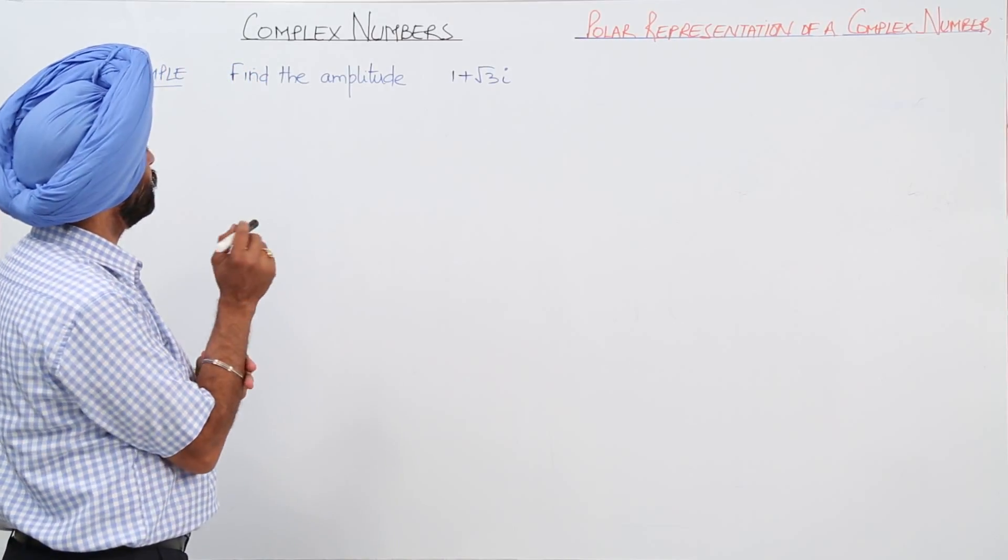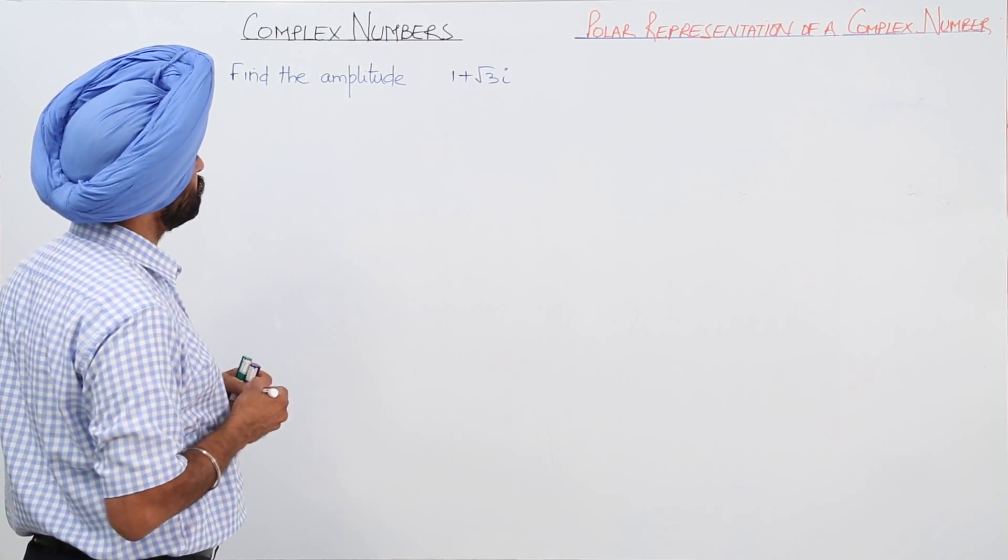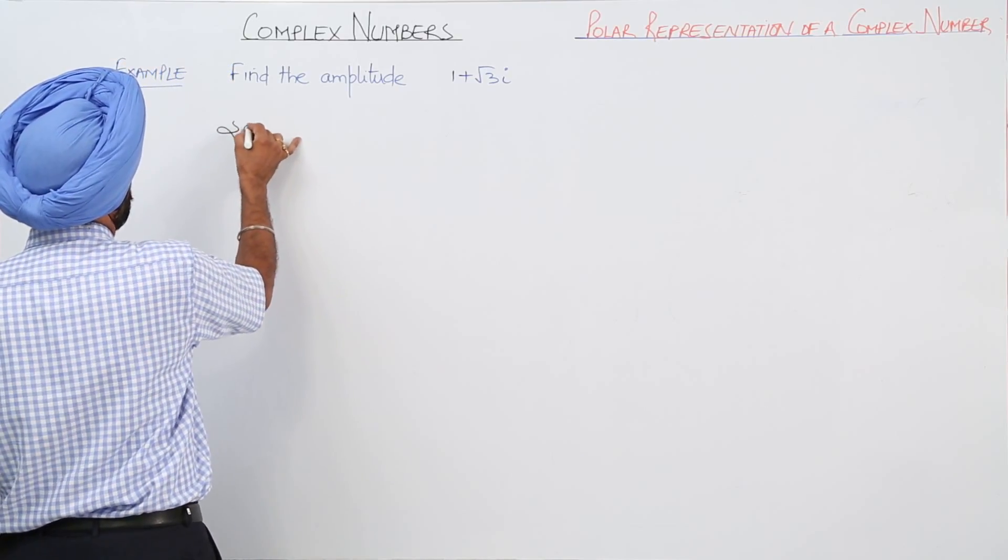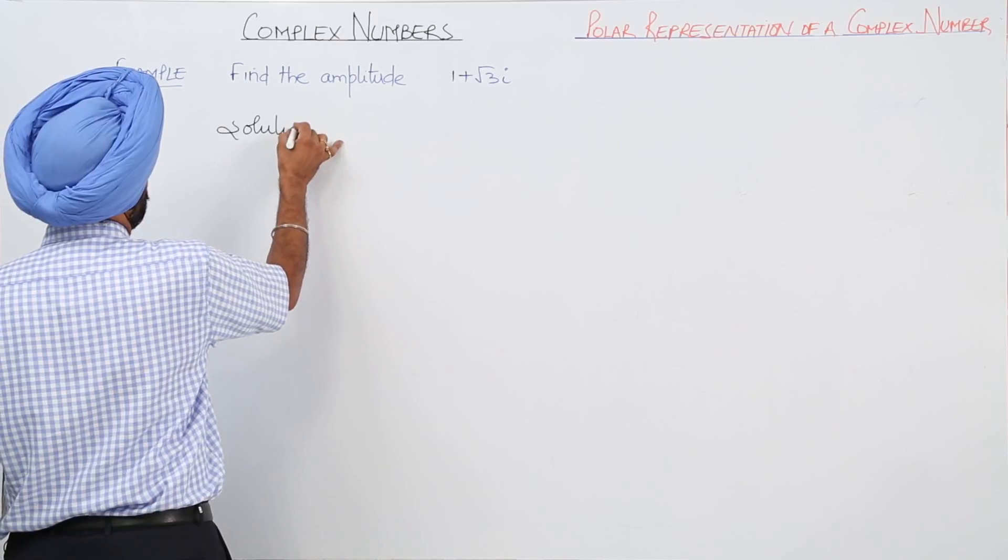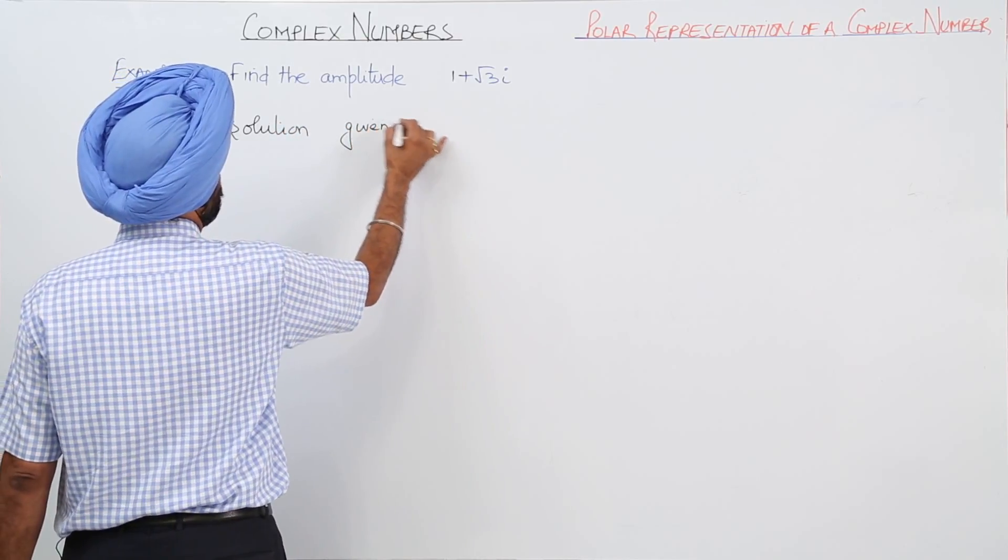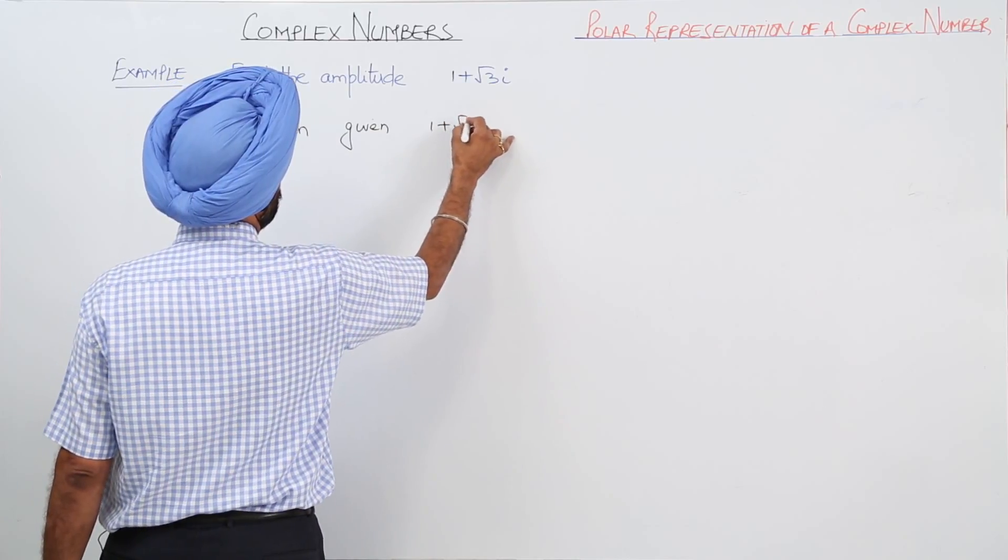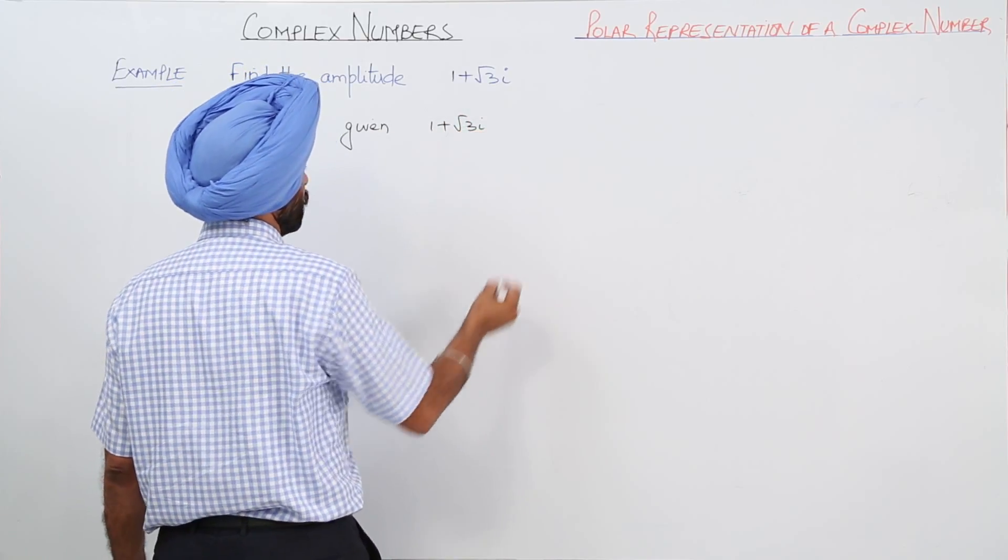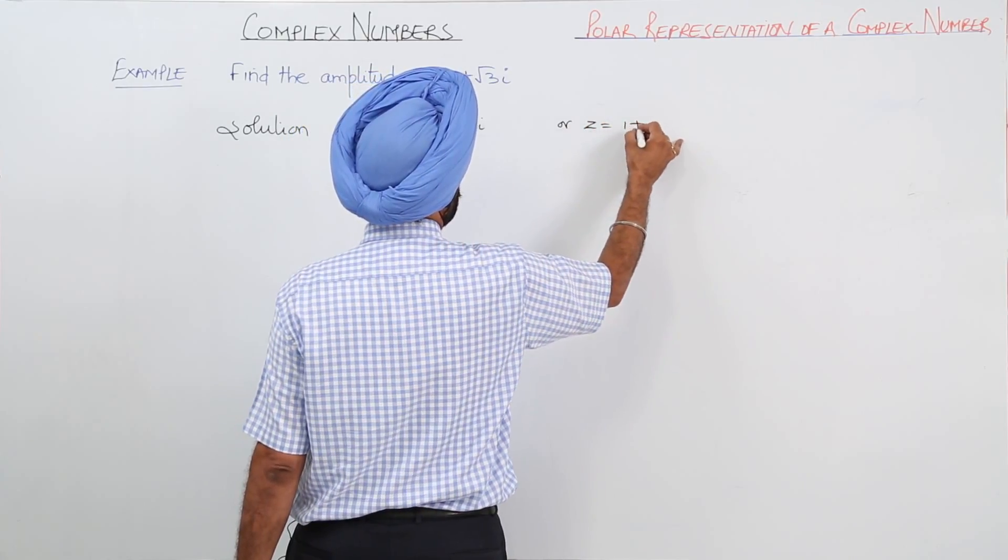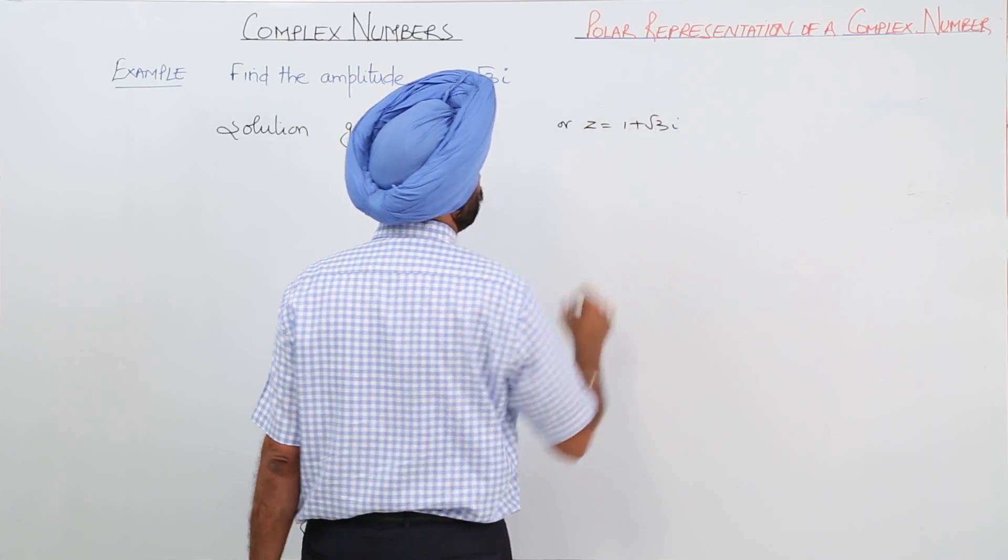Now, example to find the amplitude for 1 plus root 3 iota. Given 1 plus root 3 iota, we can write it as Z equals 1 plus root 3 iota.